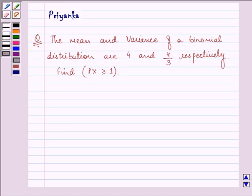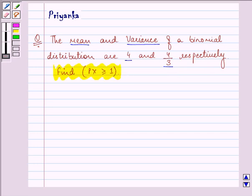Hi friends, how are you all today? The question says: the mean and variance of a binomial distribution are 4 and 4/3 respectively. Find the probability of X is greater than or equal to 1.